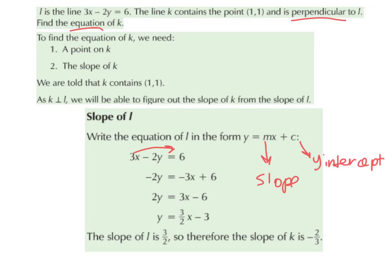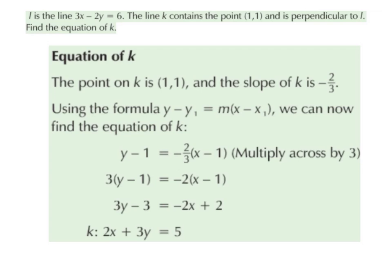To find the equation of k, we need a point on k — which is (1, 1) — and the slope of k, which is minus 2 over 3. We substitute the point and slope into the equation of the line formula from our formula book: y minus y1 equals m times x minus x1.